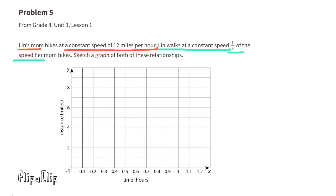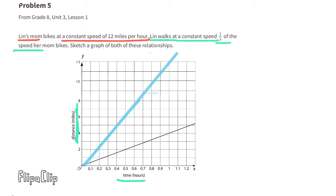Problem number 5, from 8th grade, Unit 3, Lesson 1. Lynn's mom bikes at a constant speed of 12 miles per hour. Lynn walks at a constant speed of one-third of her mom's speed. Sketch a graph of both relationships, with the x-axis as time in hours and the y-axis as distance in miles. I can use 6 miles per half hour for Lynn's mom. Starting at the origin, draw a line through 6 miles per half hour. Since one-third of 12 is 4, draw the line for Lynn's walking speed starting at the origin through 4 miles per hour.